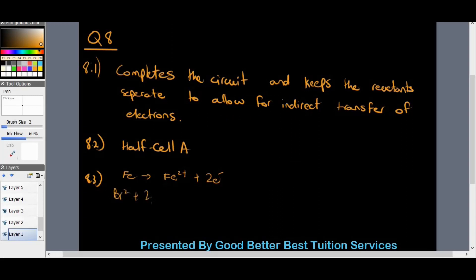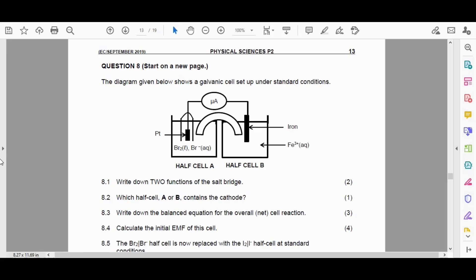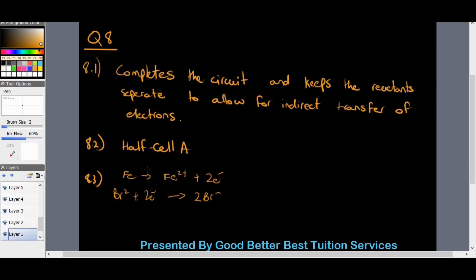So plus 2E, and that gives us 2Br minus. So they asked us to write, oh, my bad, I see, we're using that Fe3 plus. I apologize, everybody, I thought there was a 2. Let me just go correct that quickly. It's the Fe3 plus.